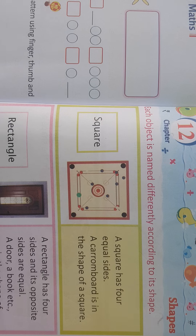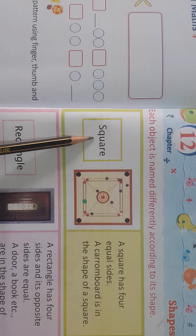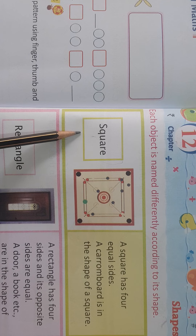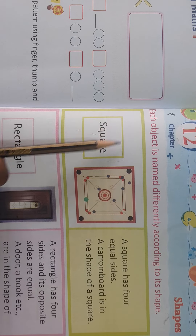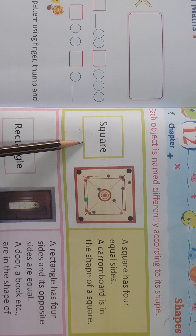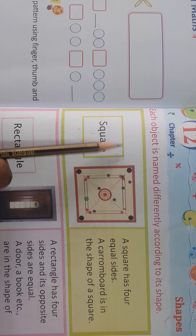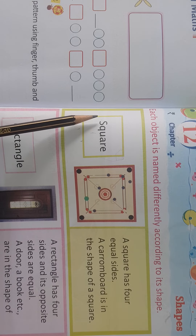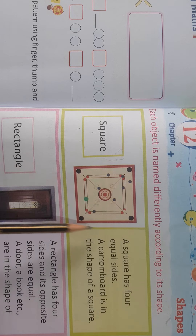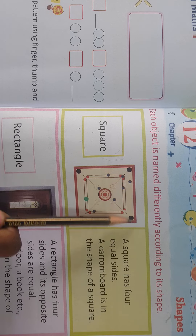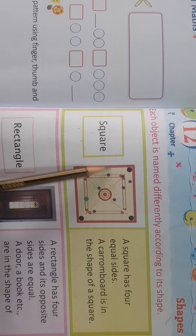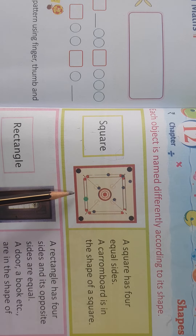So first I will tell you about plane shapes. Plane shapes are drawn using lines. For example, square. See, you can see four lines here. This shape is a square. A square has 4 sides: 1, 2, 3, 4. These four sides are equal, and the angles are exactly 90 degrees — they are completely straight. All sides are equal, so this shape is square.